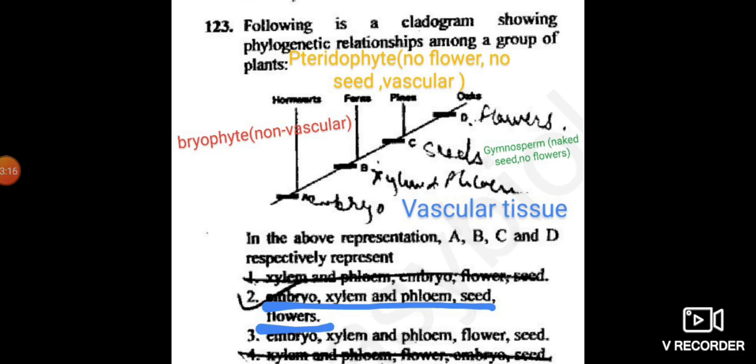So the answer will be A, that is the hornwort, it contains the embryo, that is the sporophytic phase. Then ferns, that is the pteridophytes, they don't contain any flower and seed but contain the vascular tissue, that is xylem and phloem. Then C, pines are the gymnosperms. Naked seeds are present. The seed is not enclosed in the ovule. No flowers are present. So C option will be seed. And D, the oaks are the angiosperms and it contains flowers. Flowers are the reproductive part. This is all about the phylogenetic relationship among the group of plants.